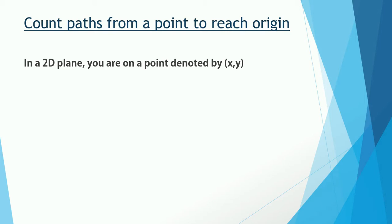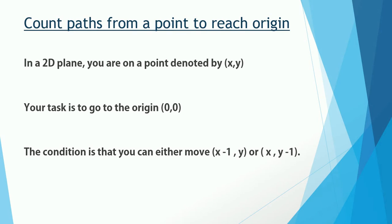This is a geometry problem. There is a 2D plane formed by the x-axis and y-axis, and in that plane you are on a point denoted by (x, y). Your task is to go to the origin, which is (0, 0). The condition is: when standing on (x, y), you can either move to (x-1, y) or to (x, y-1) — that is, move left on the x-axis or move down on the y-axis. You cannot move diagonally.